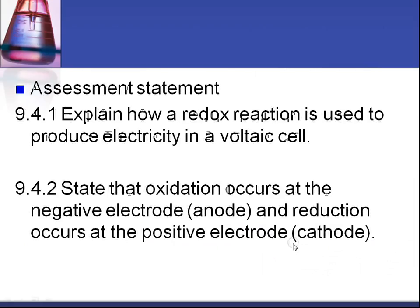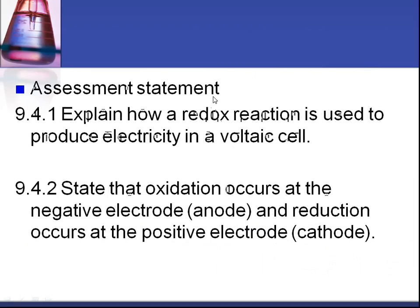Okay, so we're going to look at two assessment statements here. 9.4.1: explain how a redox reaction is used to produce electricity in a voltaic cell. And 9.4.2: state that oxidation occurs at the negative electrode, the anode, and reduction occurs at the positive electrode, the cathode.